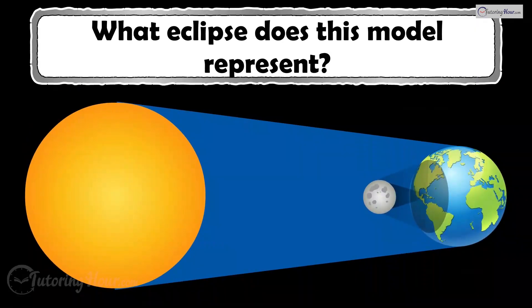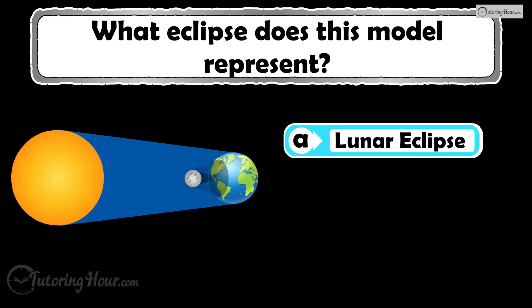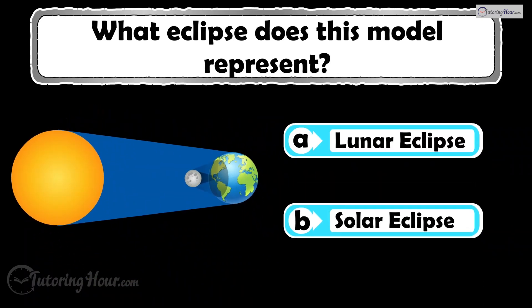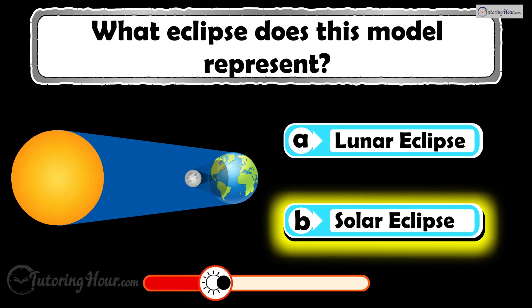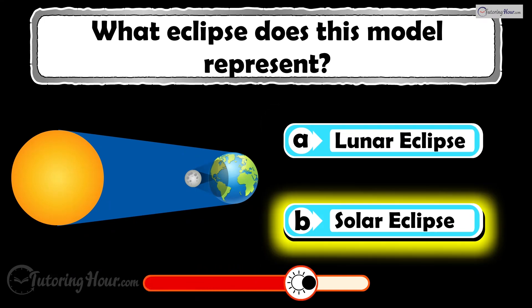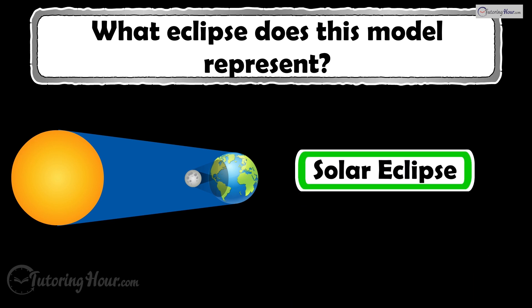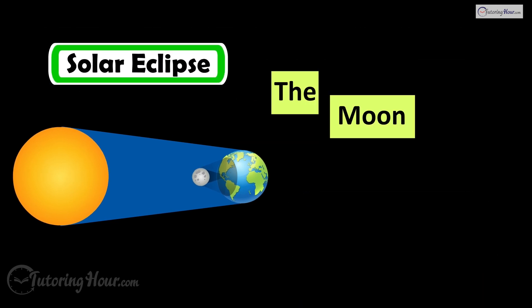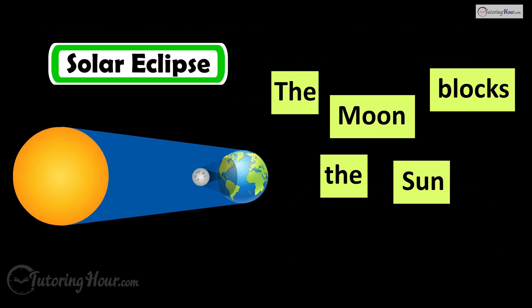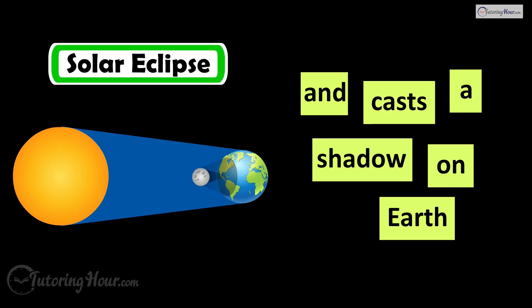What eclipse does this model represent? Is it A, lunar eclipse, or B, solar eclipse? The correct answer is the solar eclipse. It happens when the moon blocks the sun and casts a shadow on Earth.